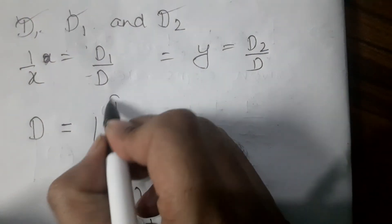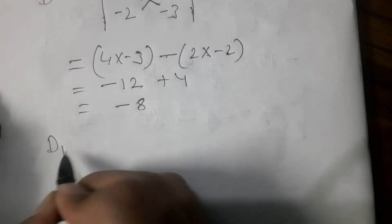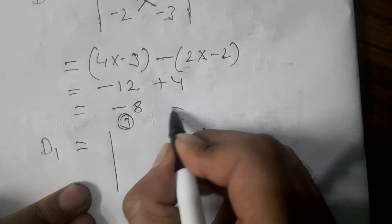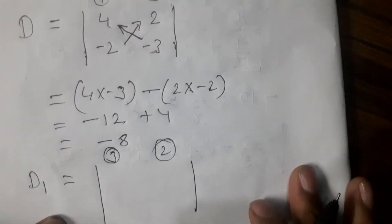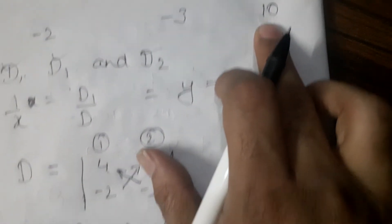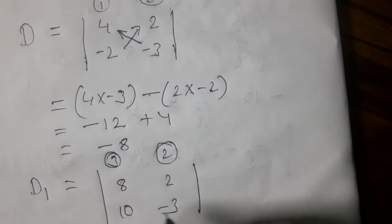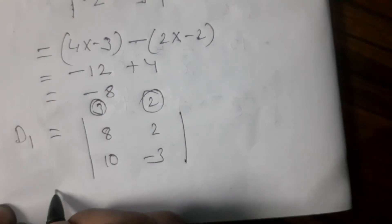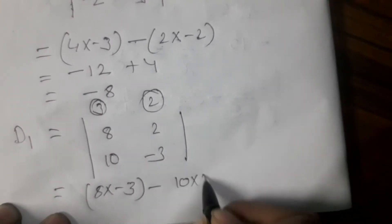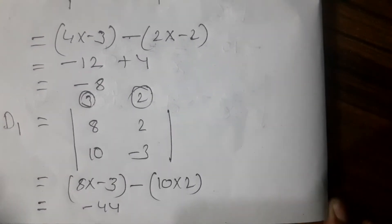So D equals minus 8. Now D1: in D1, we replace the first column with the constants. The third column has 8 and 10, and the second column is minus 2 and minus 3. So D1 equals 8 into minus 3 minus 10 into 2, which gives minus 24 minus 20. Therefore D1 equals minus 44.